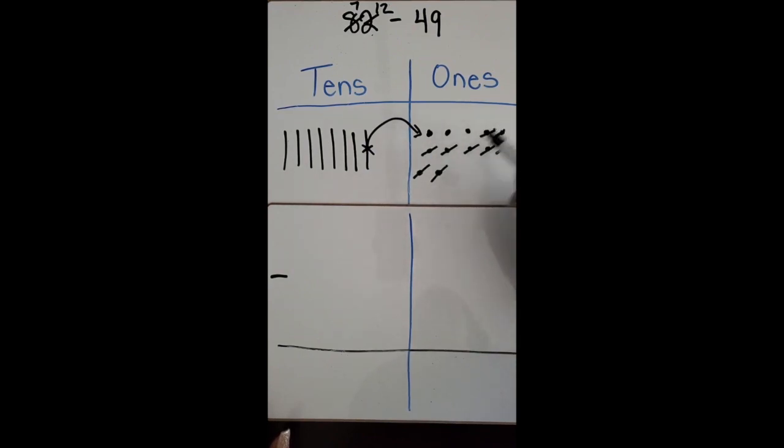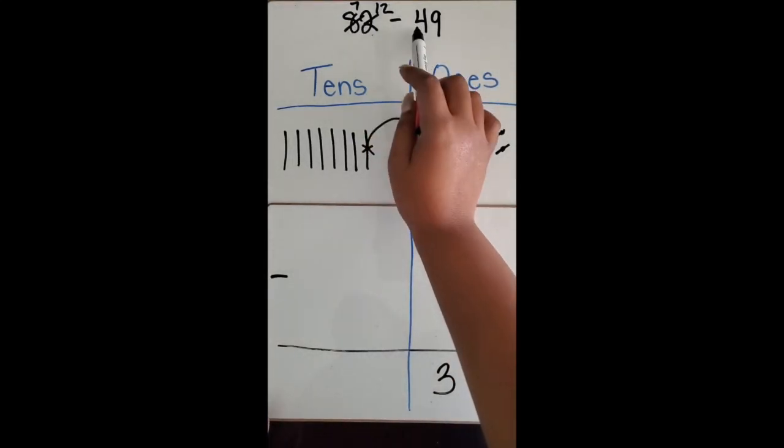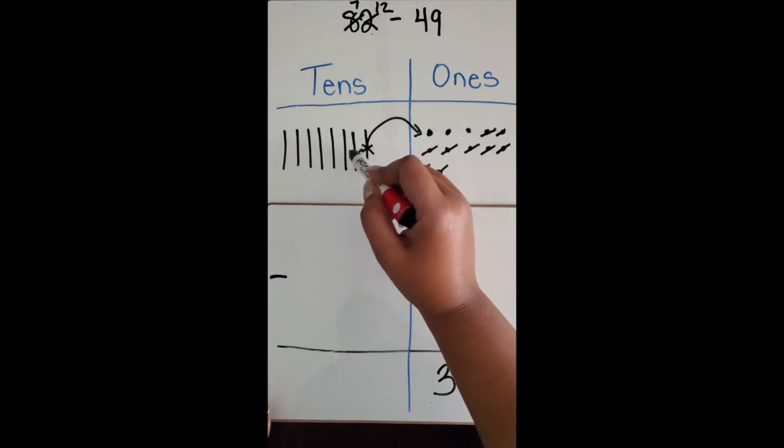And now I'm going to take away the four tens: one, two, three, four. And I have three tens remaining.